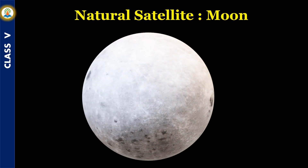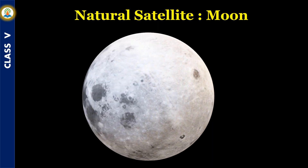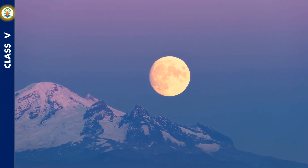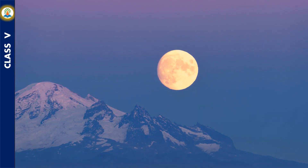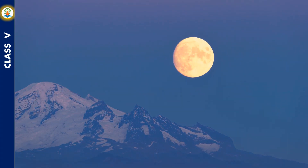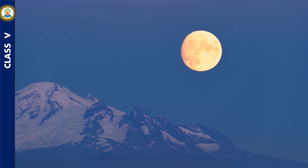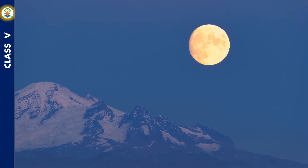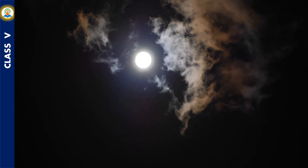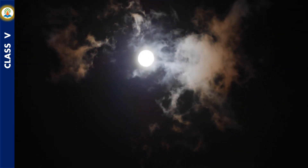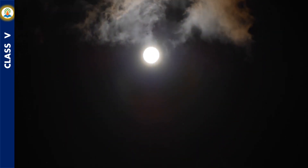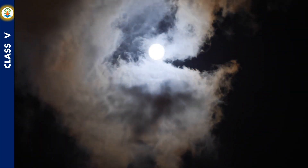Natural Satellite: Moon. The Moon is the Earth's nearest neighbor. It revolves around the Earth. The Moon does not have its own light; it shines by reflecting the sunlight. The Moon is about 4500 million years old, the same age as the Earth. It is the natural satellite of the Earth.